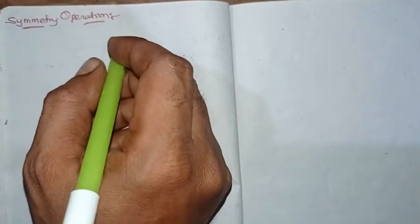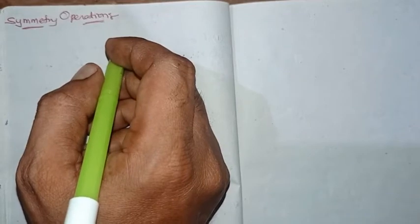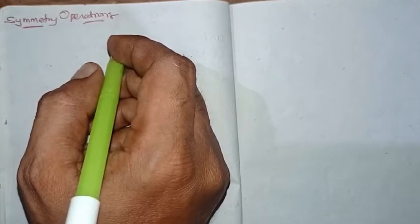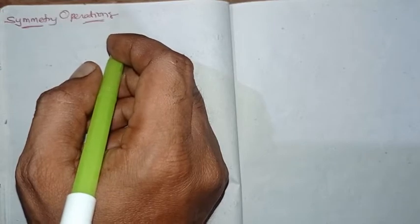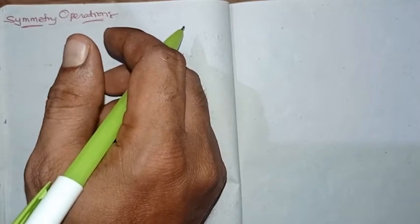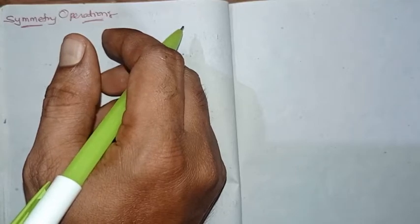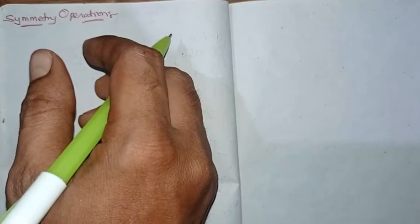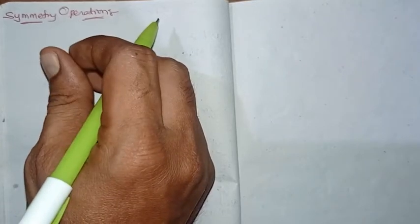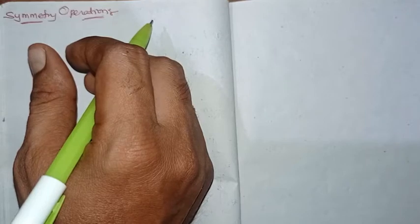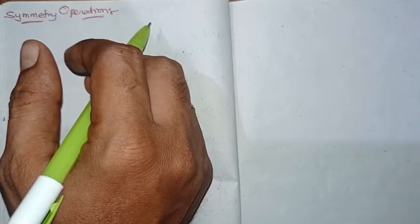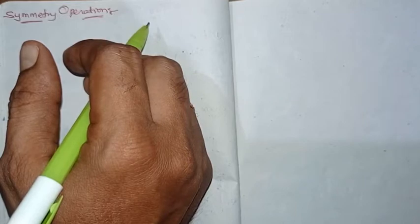In the last class I gave a slight introduction about symmetry in molecules, where we discussed equivalent and identical structures. There are three important points to remember while doing symmetry operations: first, knowing the molecular geometry and stereochemistry; second, holding the molecule in the proper way during symmetry analysis; and third, not disturbing the center of gravity of the molecule.